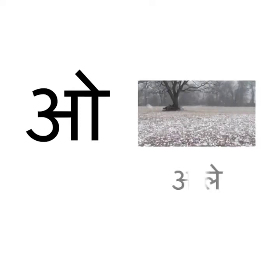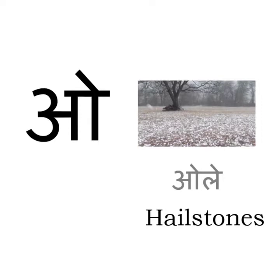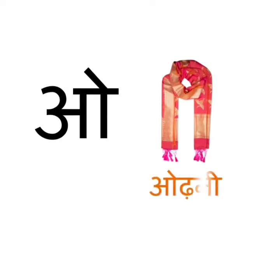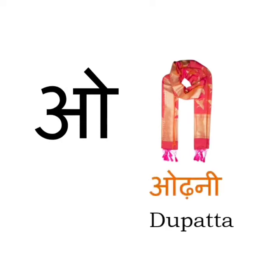Ole means hailstones — it is a small hard ball of ice that falls from the sky like rain. O se odni. Odni means dupatta, which all girls like to take when they wear Punjabi suits.